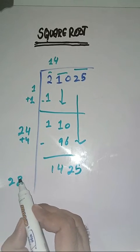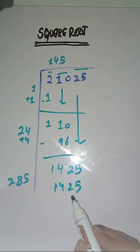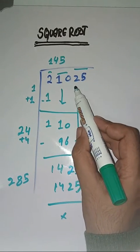Now we will take number five. Two hundred eighty-five fives are fourteen twenty-five. So this is completely solved. Square root of twenty-one zero twenty-five is one hundred forty-five.